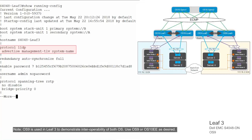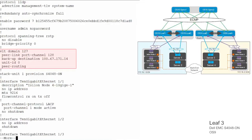Enable LLDP and configure the parameters. Note that LLDP is enabled by default on OS10 but not on OS9. Configure spanning tree RSTP to prevent loops. Assign priority to force leaf 3 as the root bridge. Configure VLT domain 127, define peer link port channel 128, define the backup destination as leaf 4, and define the unit ID and enable peer routing.